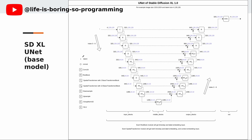Now let's look at the structure of the UNET of the base model. The diagram shows the channel dimensions for an image of 1024x1024. The latent size would be 1x4x128x128. In SDXL, there are a total of 9 input blocks, also known as the down blocks. In the middle, there is a middle block. These are the 9 output blocks, which are also known as the up blocks. The number of output blocks is the same as the number of input blocks. Our prompts will become the context embeddings and be fed to the spatial transformer blocks. All of the blocks will get the time embedding and label embedding as input.